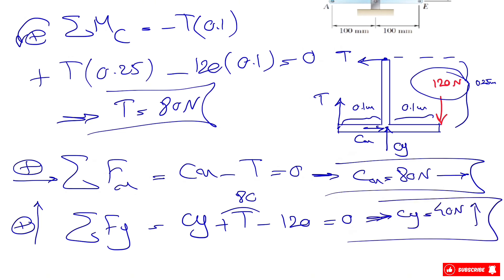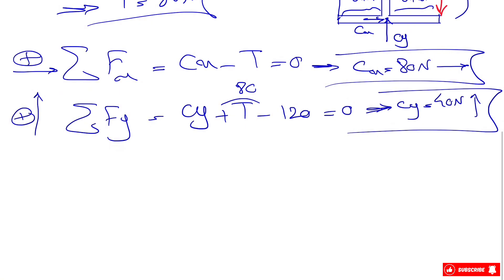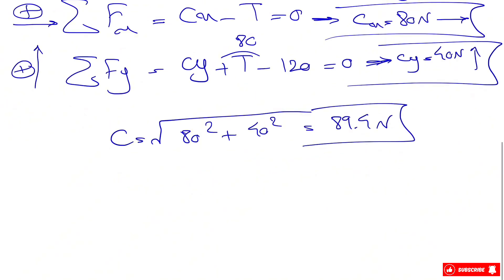To find the magnitude of C, we have Cx squared plus Cy squared, which gives us 89.4 newtons.